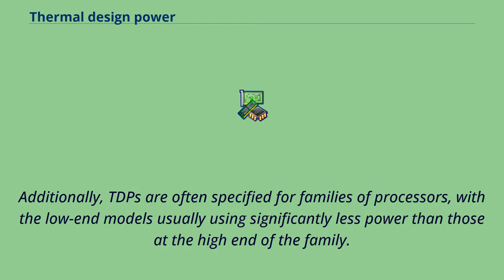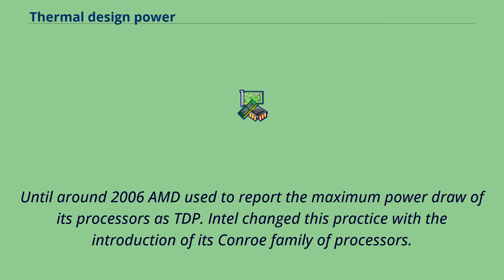Additionally, TDPs are often specified for families of processors, with the low-end models usually using significantly less power than those at the high-end of the family. Until around 2006, AMD used to report the maximum power draw of its processors as TDP.